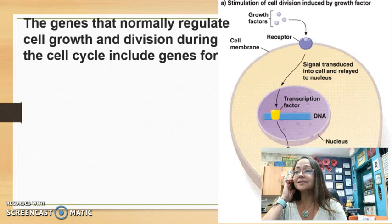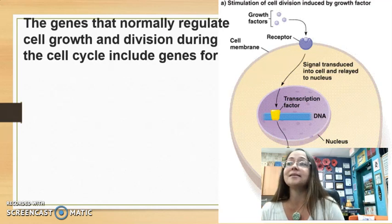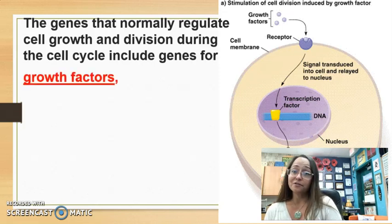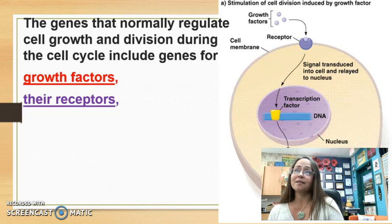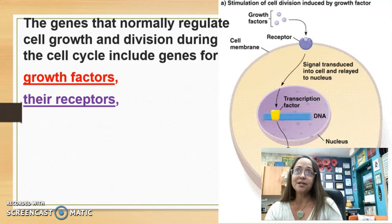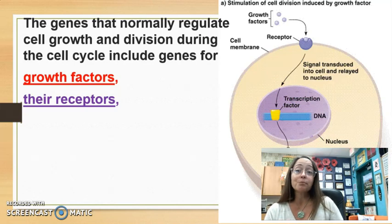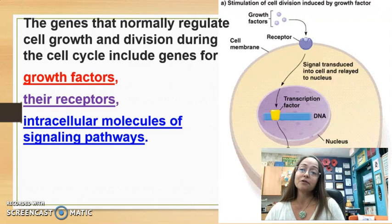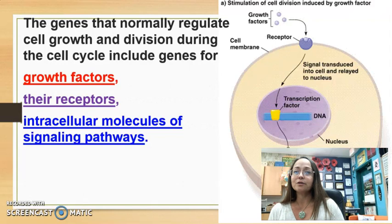When we look at the genes that normally regulate cell growth and division during the cell cycle, these include genes for growth factors and their receptors. For example, if a growth factor attaches to a receptor tyrosine kinase, it would be the genes that code for that tyrosine kinase, because receptors are proteins coded for by genes. Errors can also occur in the intracellular molecules of signaling pathways, like relay proteins.